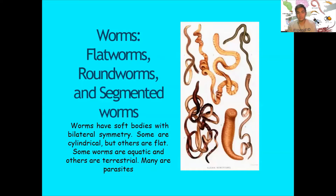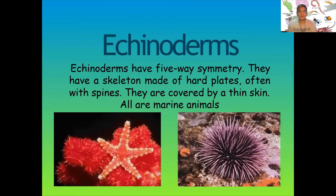Worms include flat worms, round worms, and segmented worms. They have soft bodies with bilateral symmetry; some are cylindrical but others are flat. Some worms are aquatic and others are terrestrial, and many are parasites. Echinoderms have five-way symmetry and a skeleton made up of hard plates, often with spines. They are covered by a thin skin and are all marine animals.